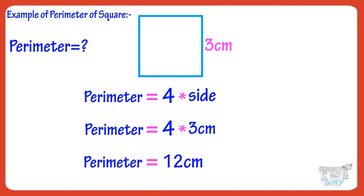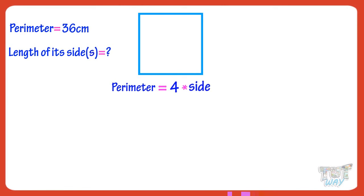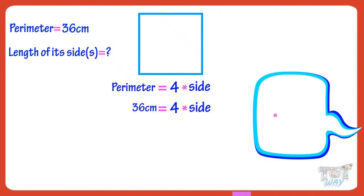Now, let's move to another question. Here we have a square with parameter 36 cm, and we have to find the length of its side. We know parameter is 4 multiplied with side. Filling the value of parameter, we get 36 equals 4 multiplied by side. We can think: multiply 4 with which number to get 36. If we multiply 4 with 9, we get 36. So, side equals 9 cm.